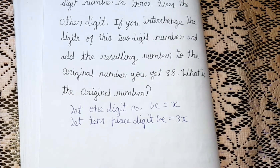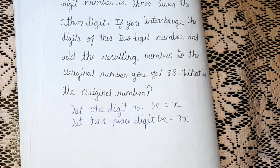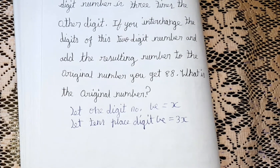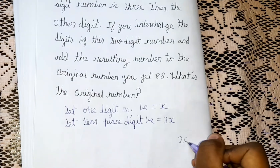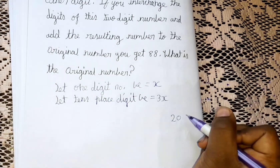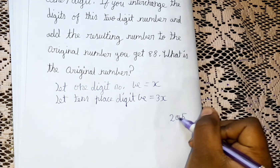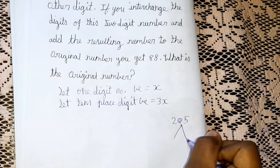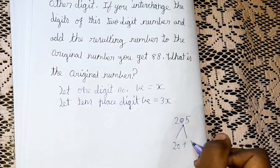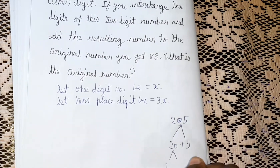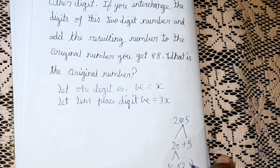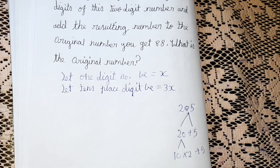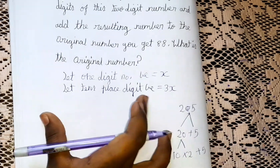Now we can find the original number. Let me first teach you how to separate a two-digit number. Take the number 25 — we can separate it as 20 plus 5, which equals 25, or as 10 times 2 plus 5, which is 10 times 2 is 20, plus 5 is 25. We'll use this same method for our question.